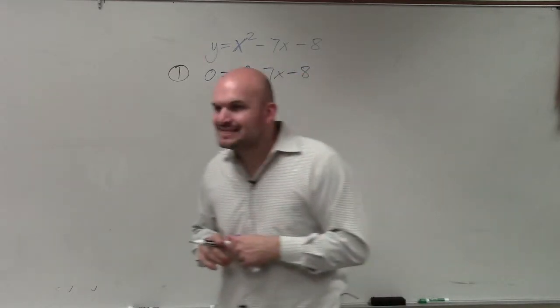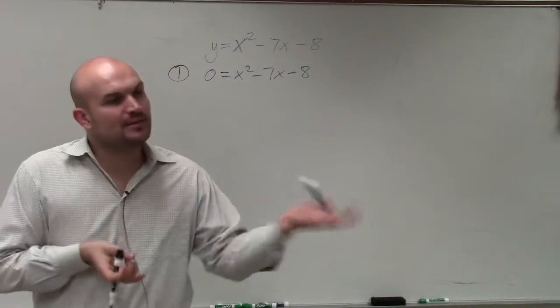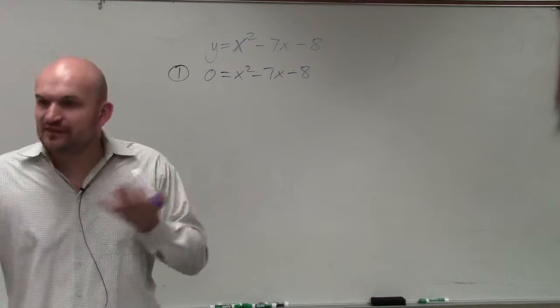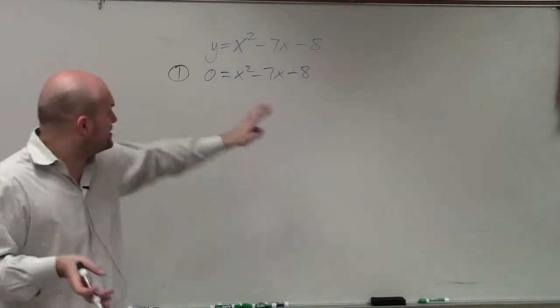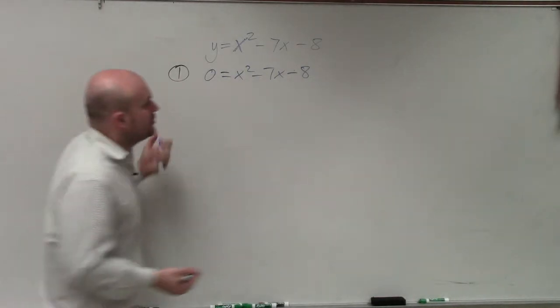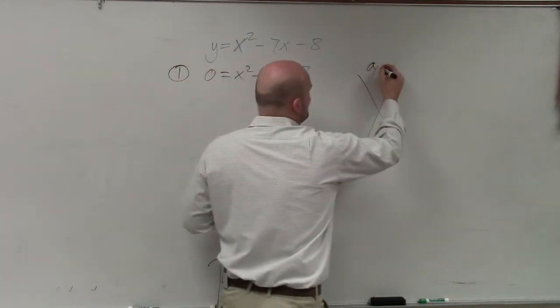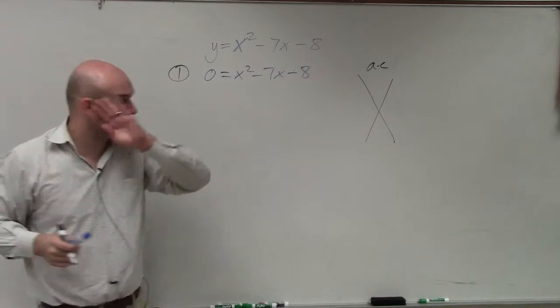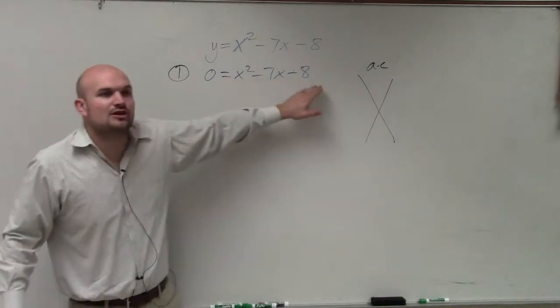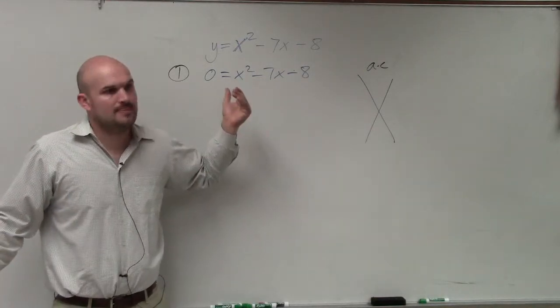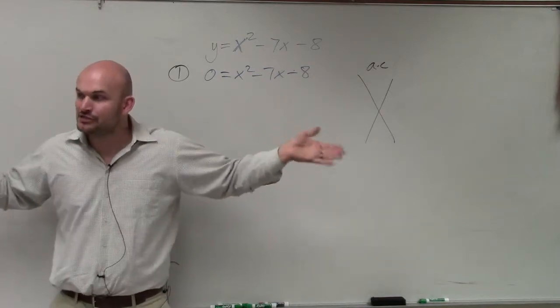OK, then the next step was, since it was set equal to 0, the reason why we want to use 0 is so we could factor it. Now we want to factor this because we have more than one x variable. So the factoring technique that we used was this a times c method. Because again, we go back to our last statement. Is there anything all three of these terms have in common that I could factor out? No. So therefore I can't factor out the GCF.